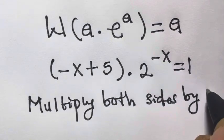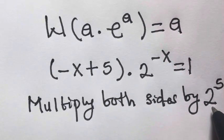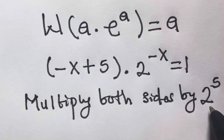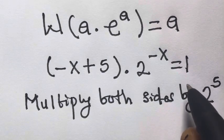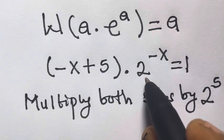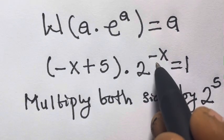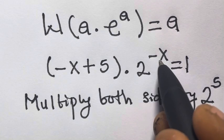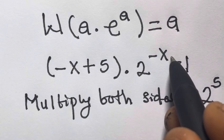We multiply both sides by 2 raised to power 5 in order to create the same power. So that this will have 2 raised to power 5, giving us minus x plus 5 in the exponent, so that it will be easy for us to apply the Lambert W function.